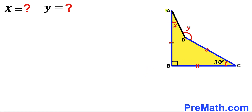Let's make an observation. We can see that side AB is equal to side BC, and the angle between them is 90 degrees.